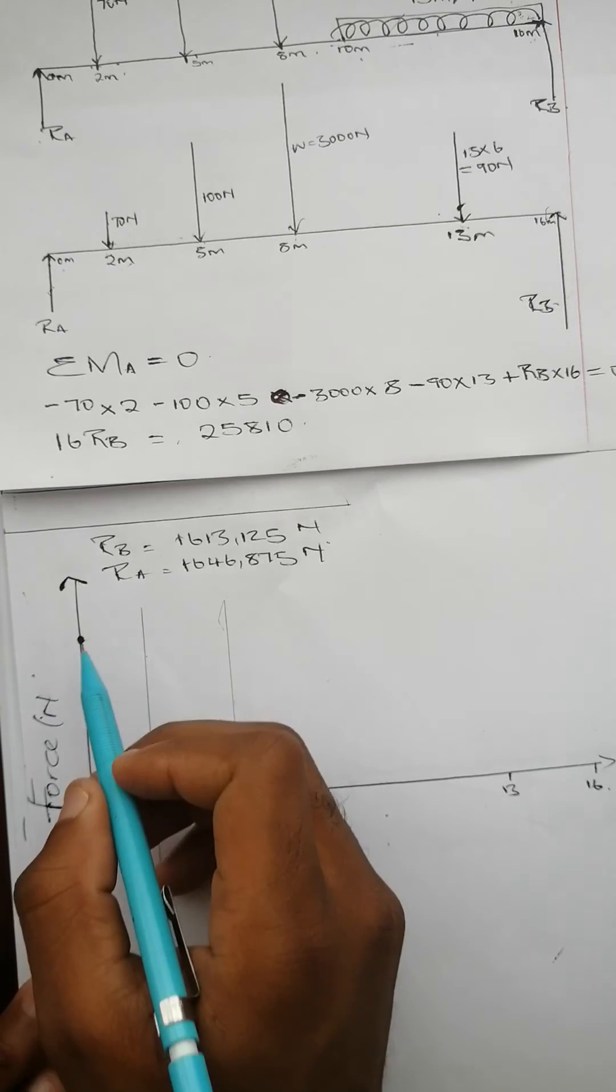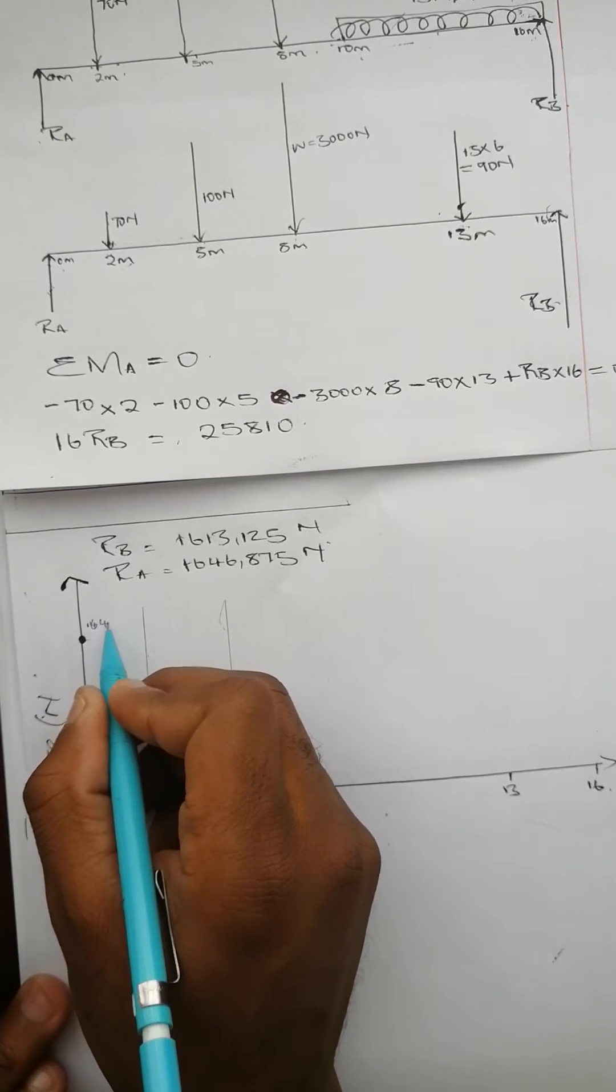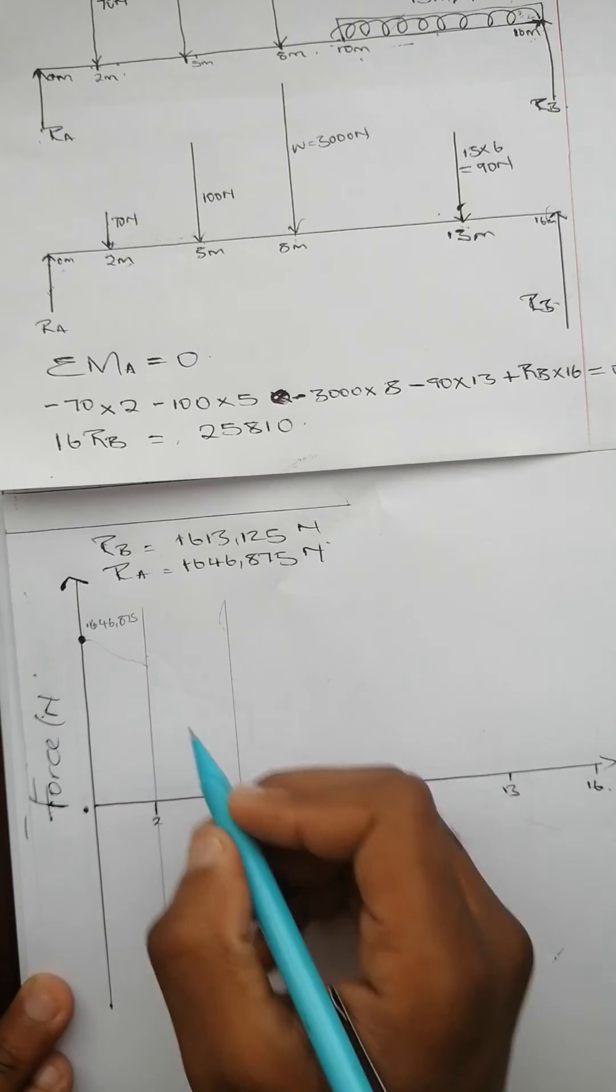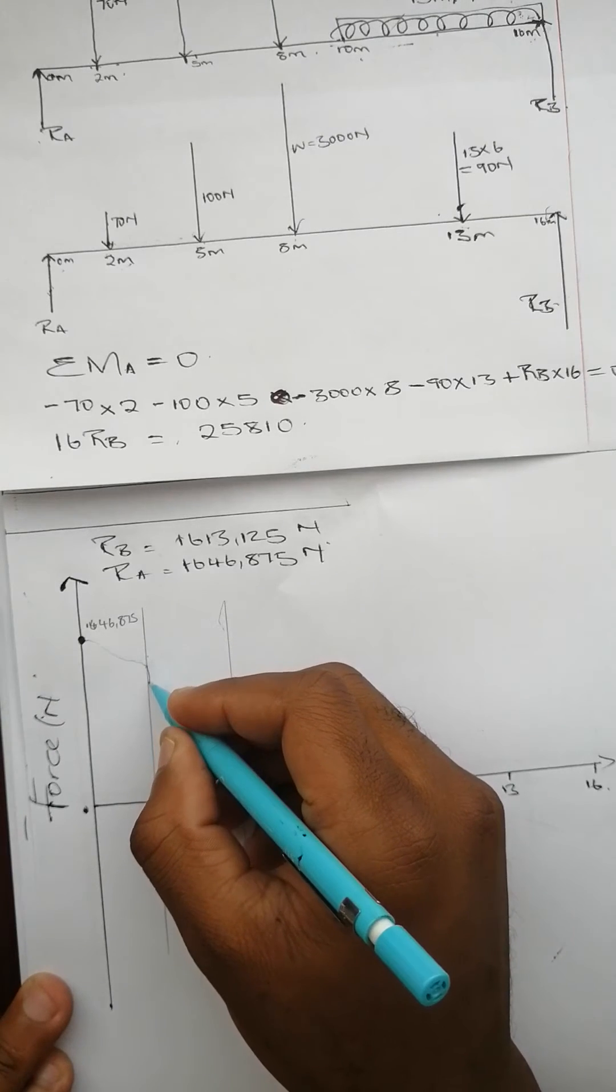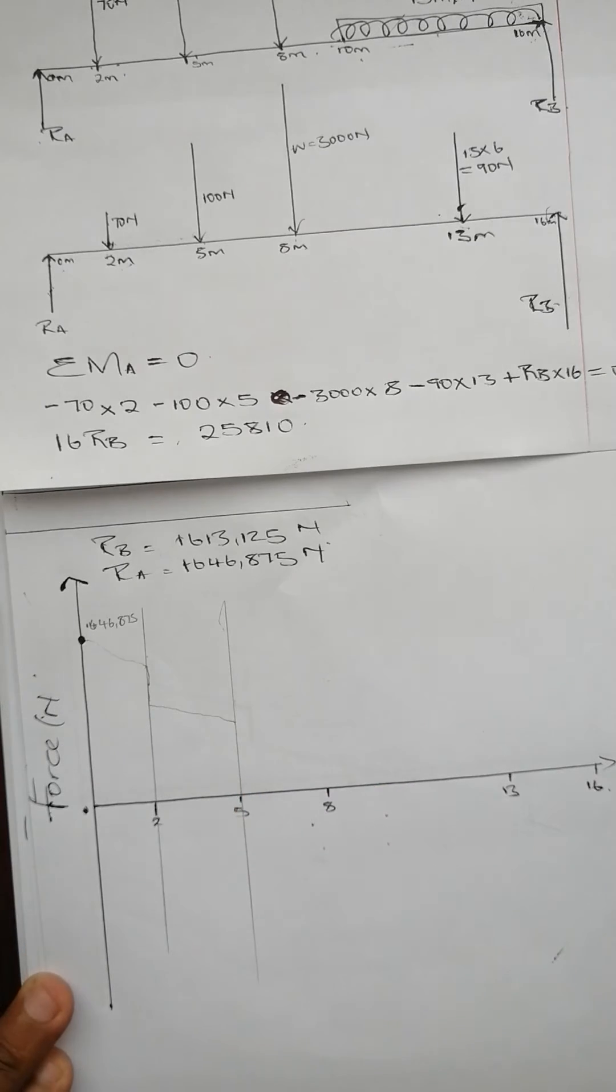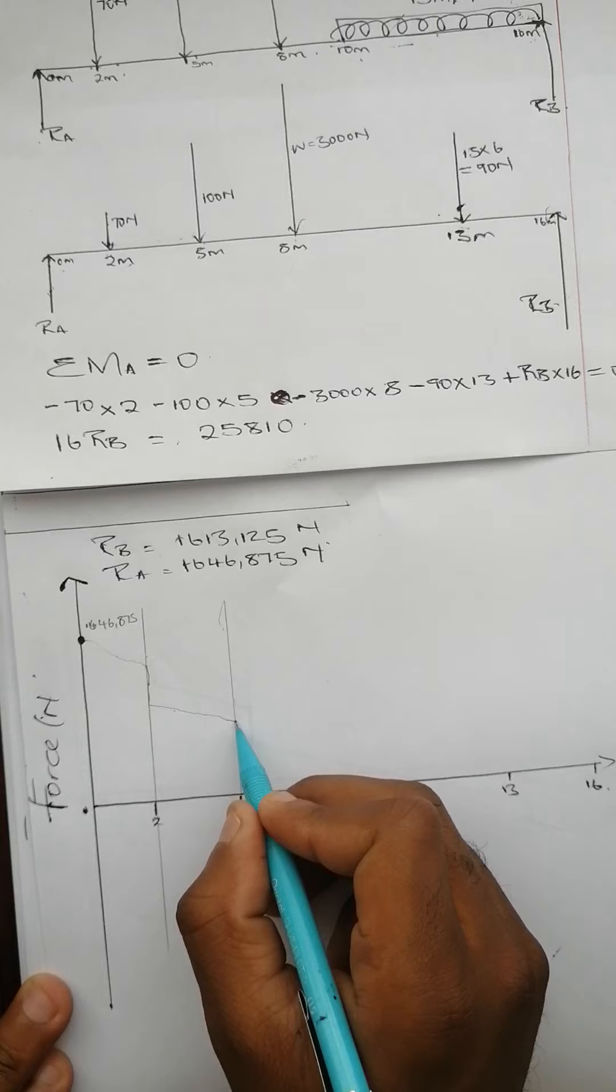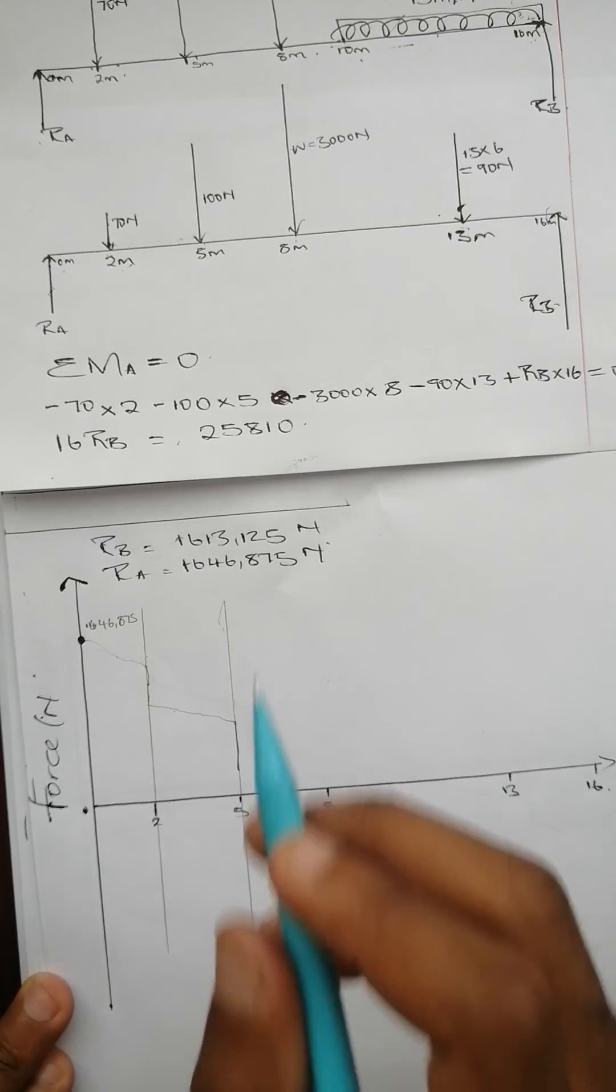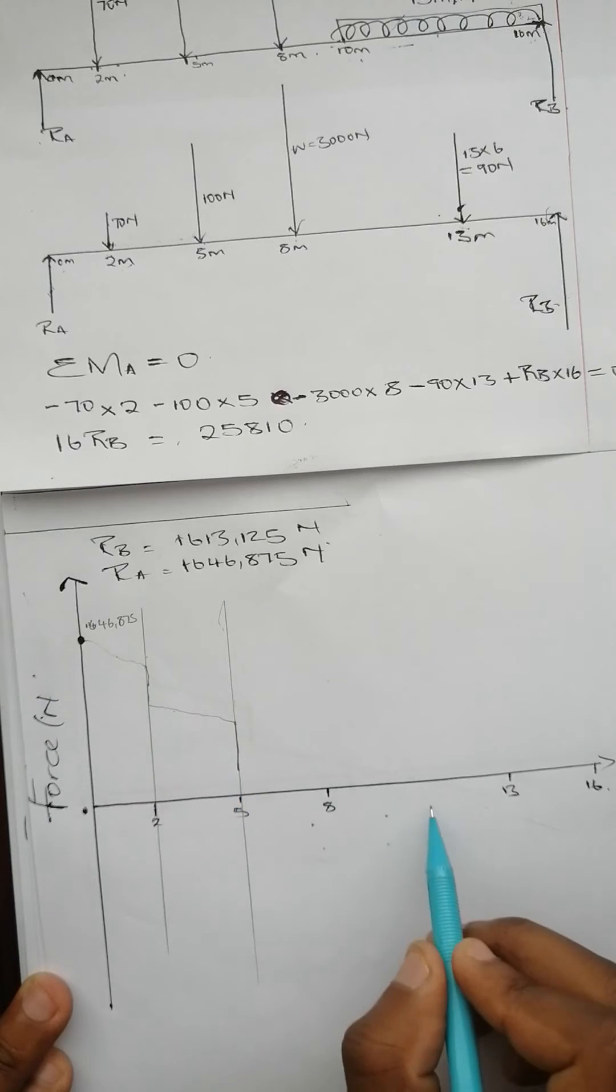Starting at 1646.875, it's going to slant up until 2 meters where there's a point load of 70 Newtons. We subtract that 70, then it continues slanting at the same gradient. Then at 5 meters where there's a point load of 100 Newtons, subtract that 100.